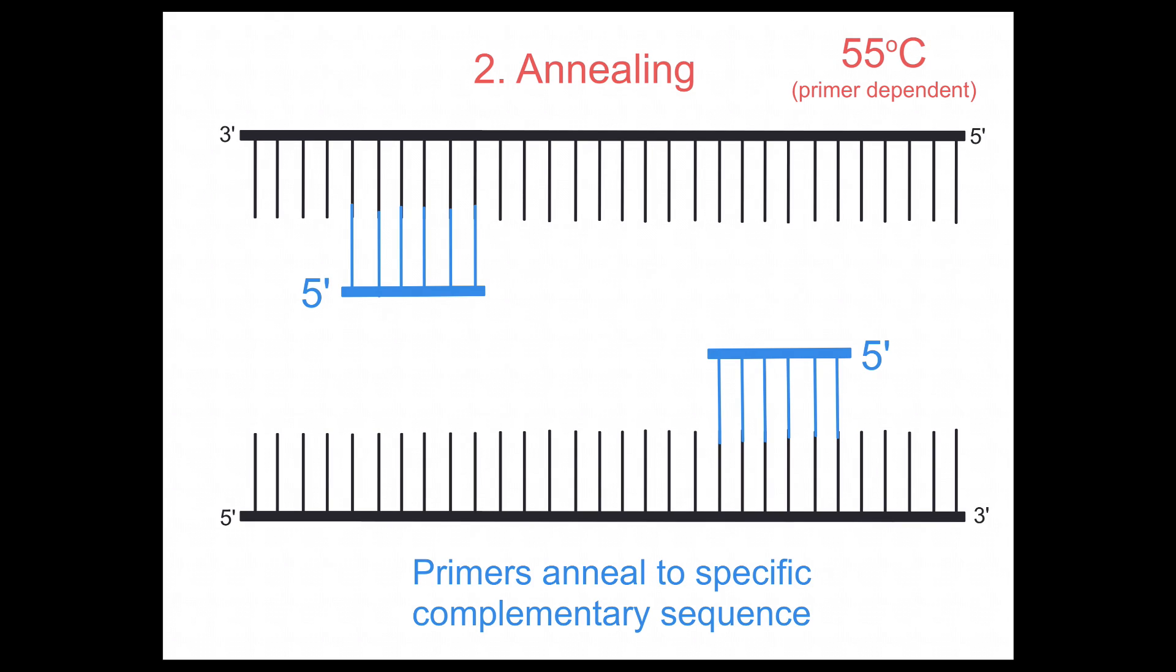The second stage is known as primer annealing, and it occurs at 55 degrees Celsius, but this sometimes can vary based on the primers that you introduce into the reaction. Essentially, primers are single-stranded pieces of DNA indicated here in blue, and they are complementary to the target region. You design these and specify the sequence that will be in the primer so that it will hydrogen bond with the target region. One primer will bind to each strand, and you specify that. That way you actually indicate what area you want to be amplified.